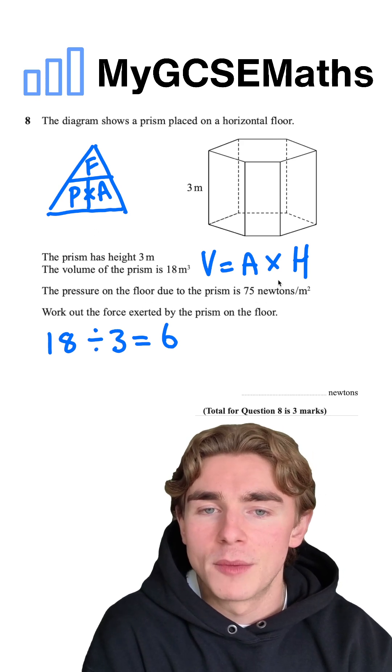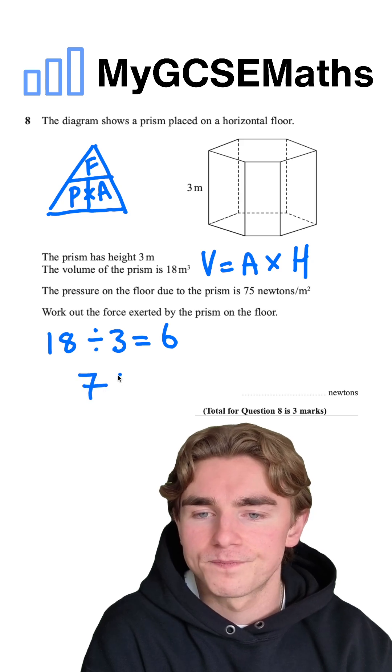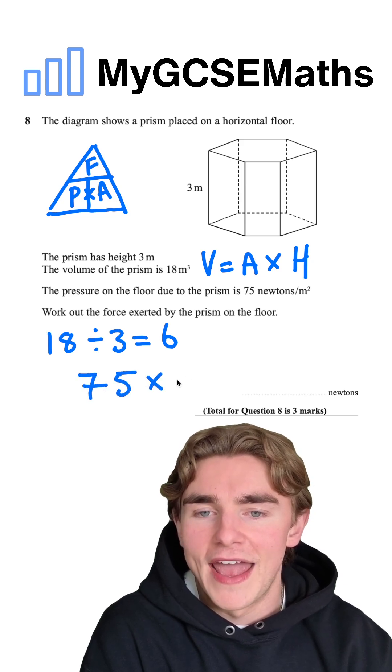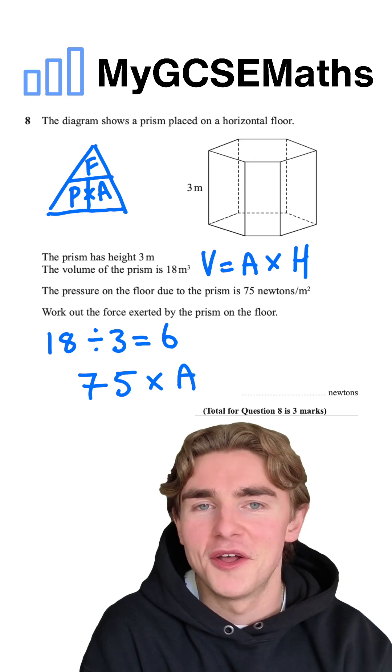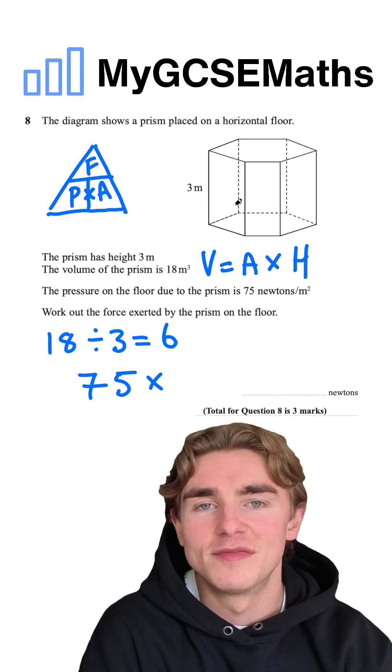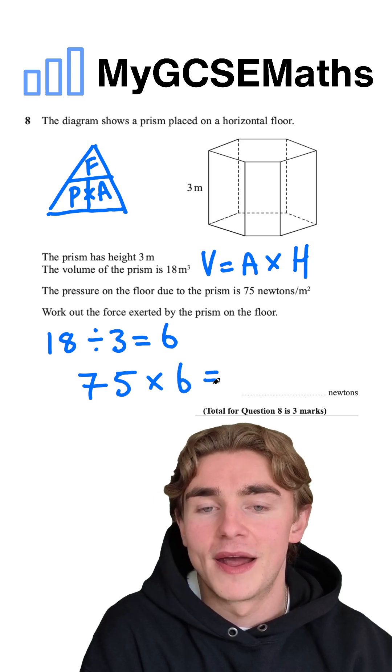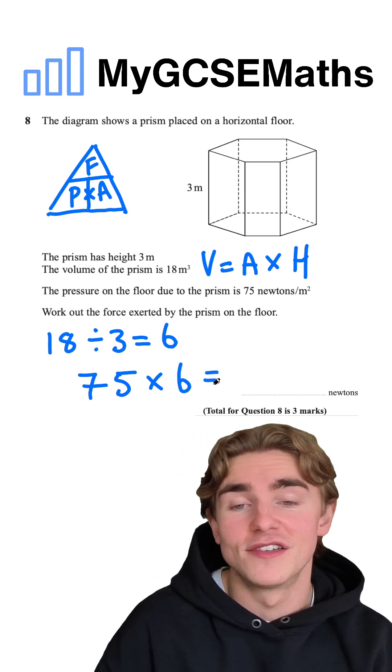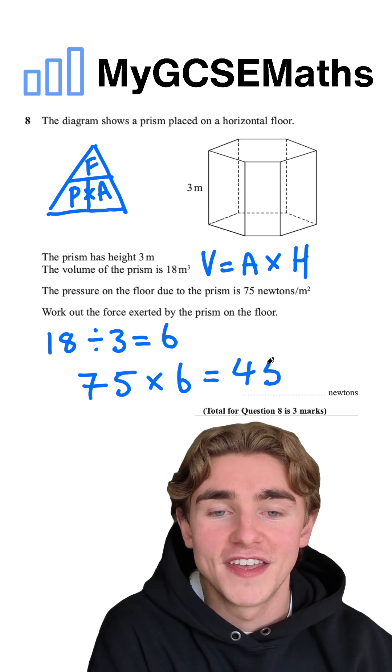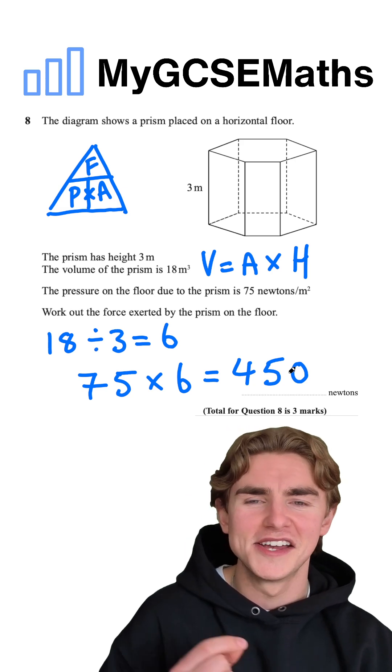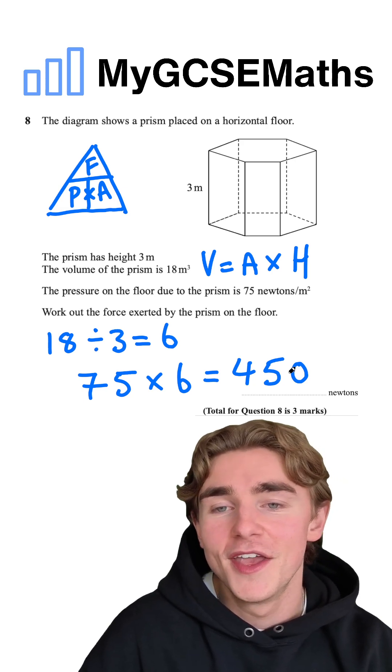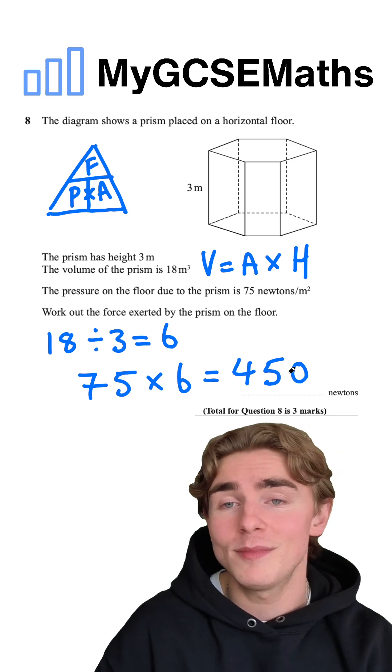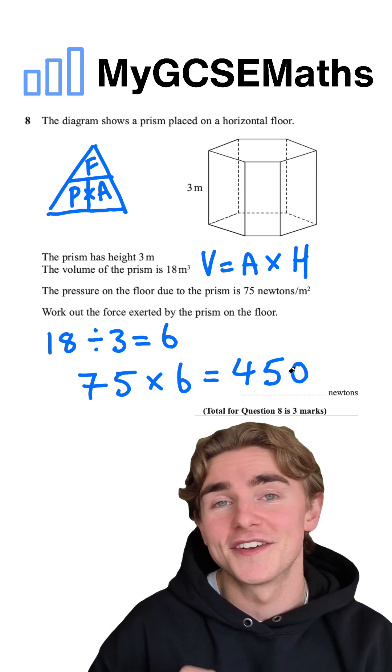So we're going to do our pressure of 75 times by our area of 6. 75 times by 3 is going to be 225, so 75 times by 6 is going to be 450. I did that one very quickly, guys. Take your time with that multiplication. We do the pressure times by the area to get that force.